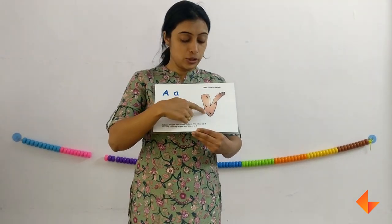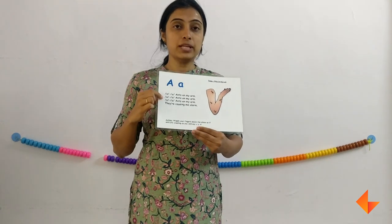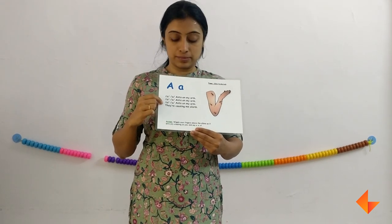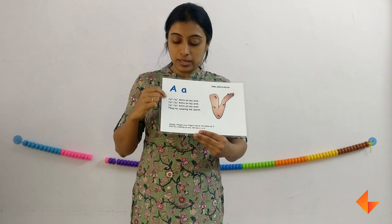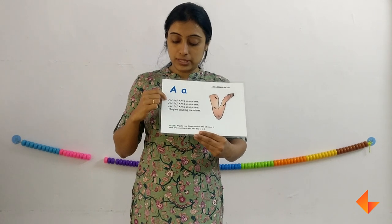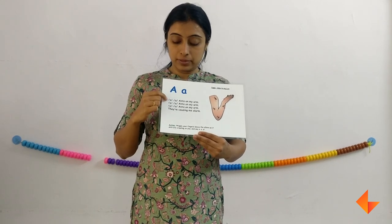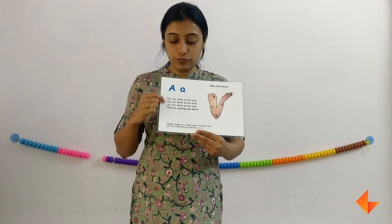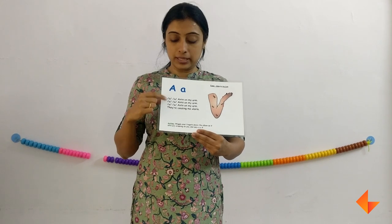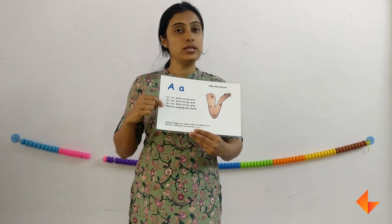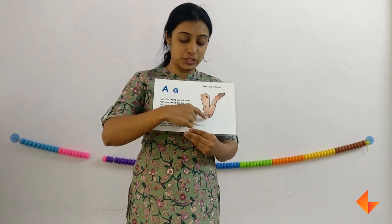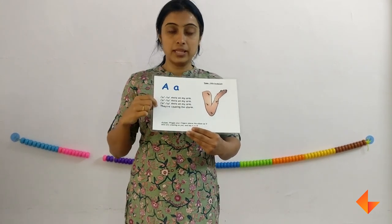Remember that when you are singing the rhyme, you need to sing it 2 to 3 times with action. Sing the rhyme, sing each line, pause, wait for kids to repeat, and then move on to the next line. So first the picture, then the rhyme.